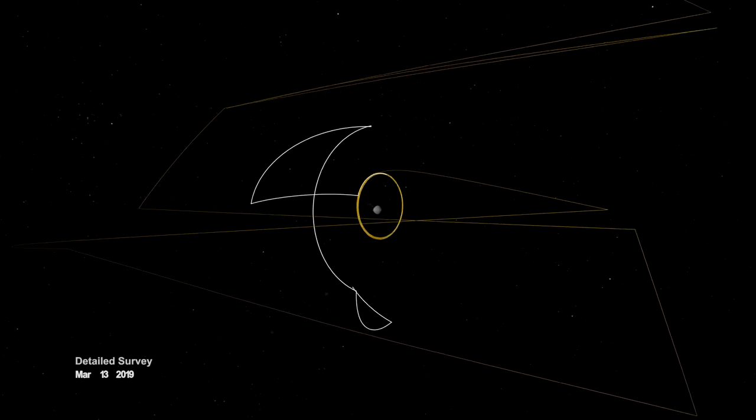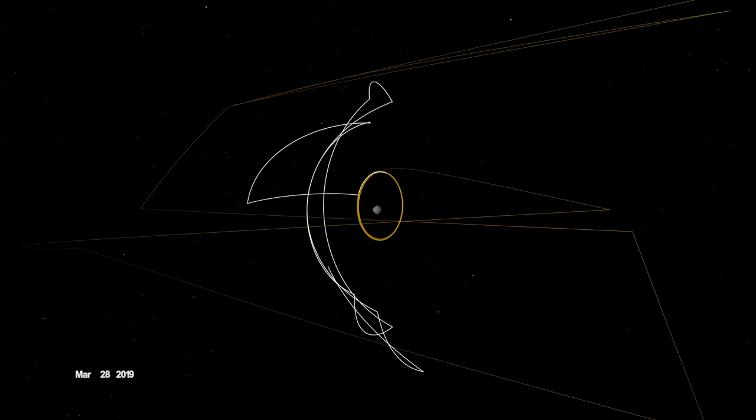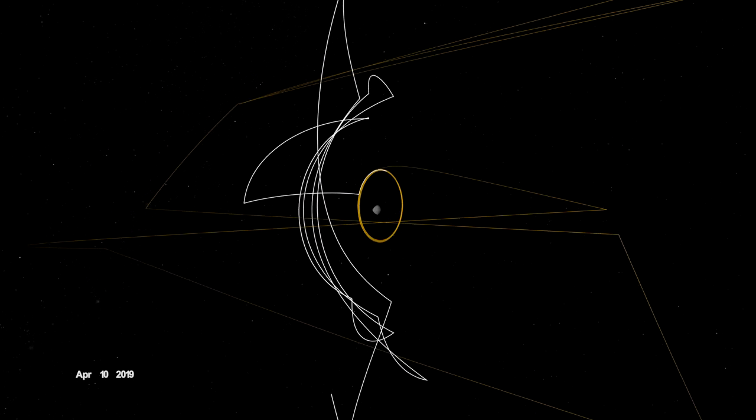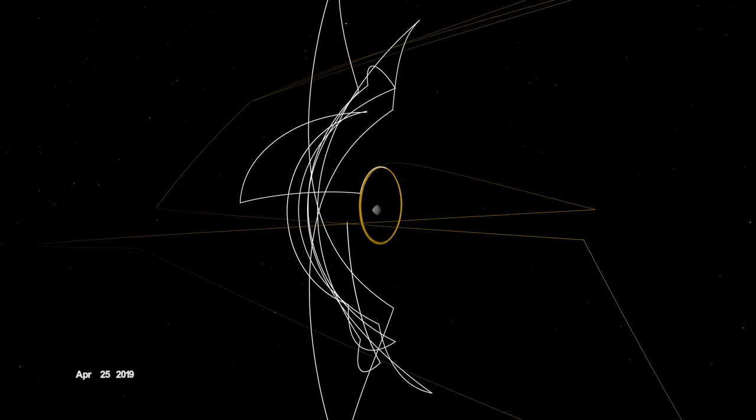In early 2019, it broke orbit to conduct a detailed survey. A series of sweeping passes allowed OSIRIS-REx to study geological features at different latitudes and times of day, enabling stereo imaging and landmark-based navigation.